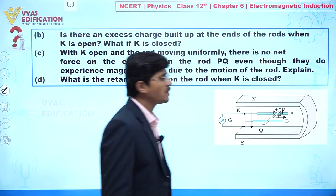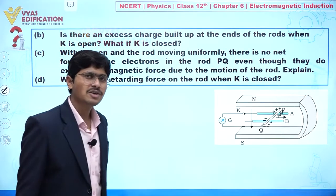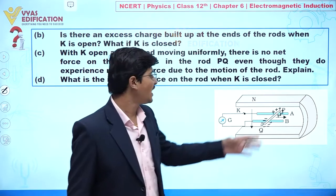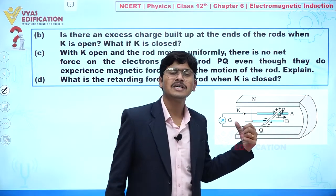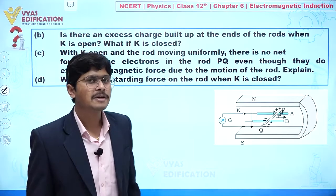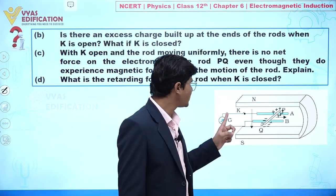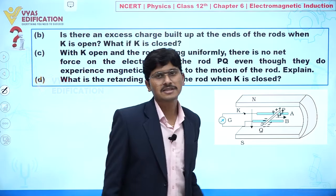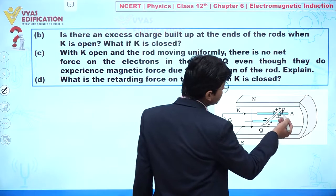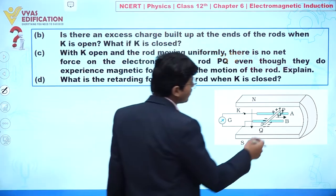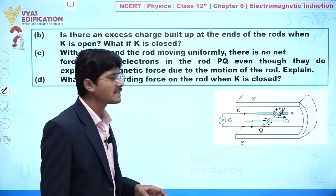Point P is at higher potential and point Q is at lower potential. Higher potential means a deficiency of electrons at that end, while lower potential means an excess of electrons. This charge separation is due to the Lorentz (magnetic) force acting on the free electrons in the rod. When the key is open, current does not flow, but the induced EMF is generated and P is at higher potential compared to Q.